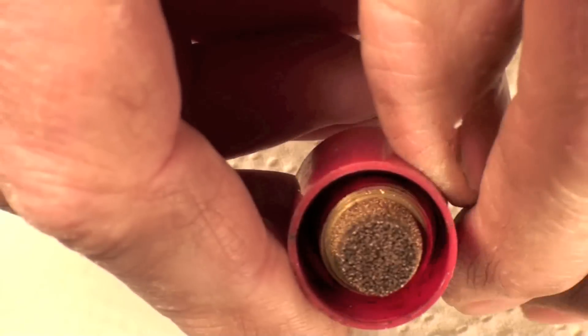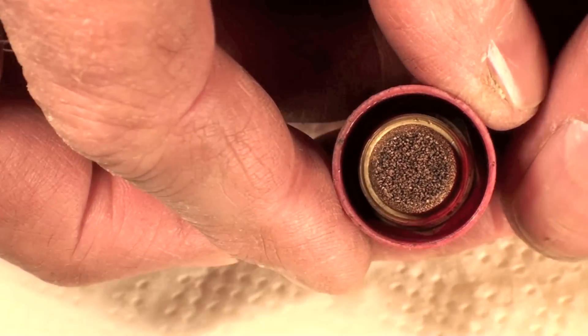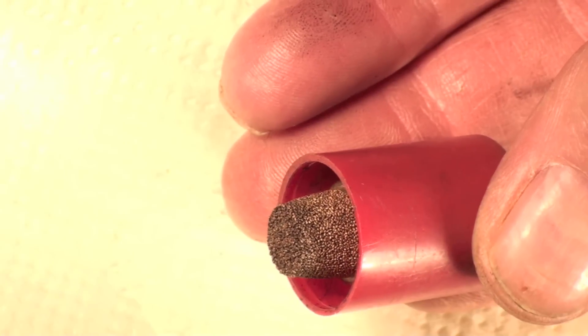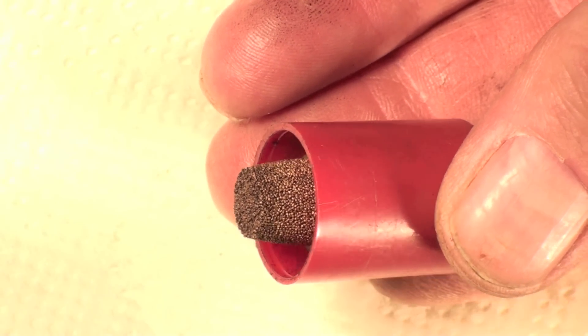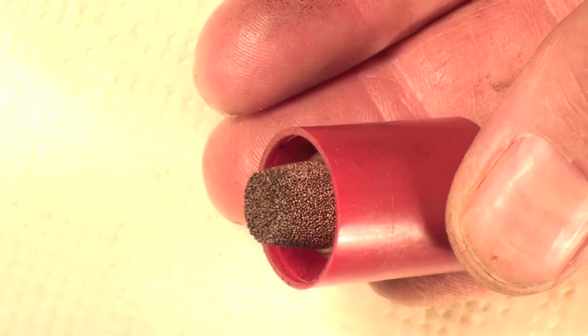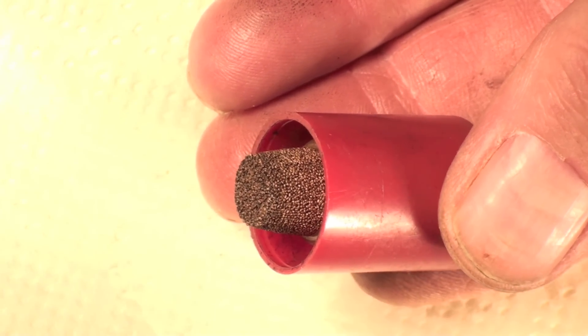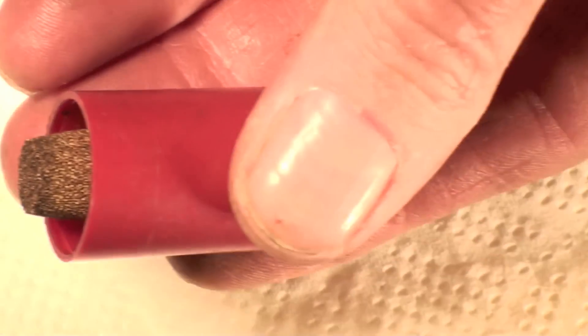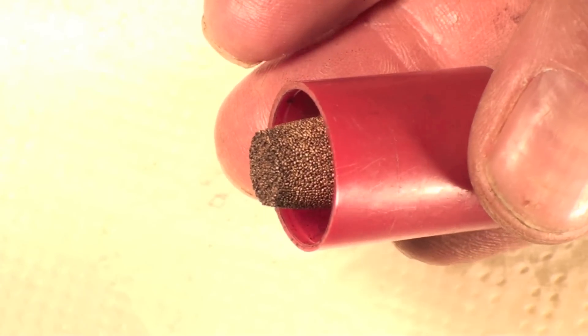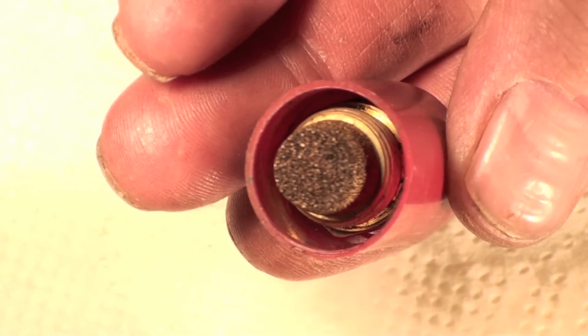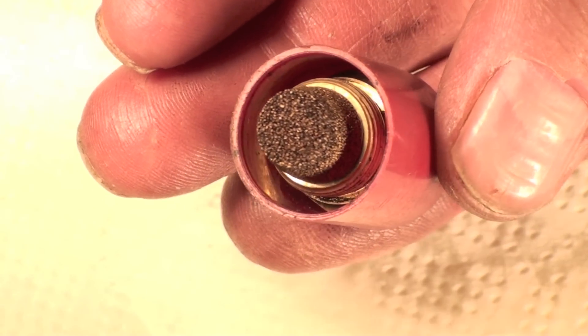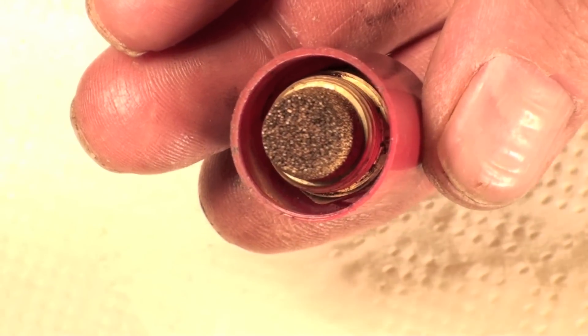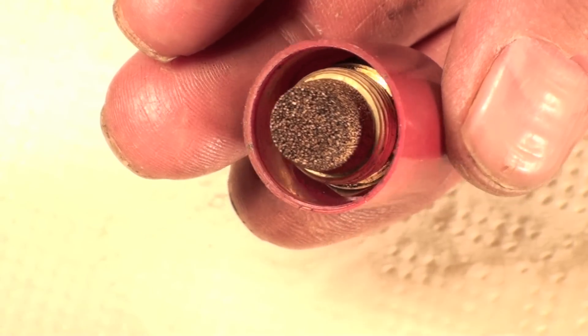If I was going to put this nozzle in, I would take the cap off and put it in just like this, never touching it. Never touch that sintered bronze part. Don't even take it out of the container. Just put it right into the gun. That's how I do it. Do not touch that - it's too easy to get it contaminated, and they'll plug up really easily.